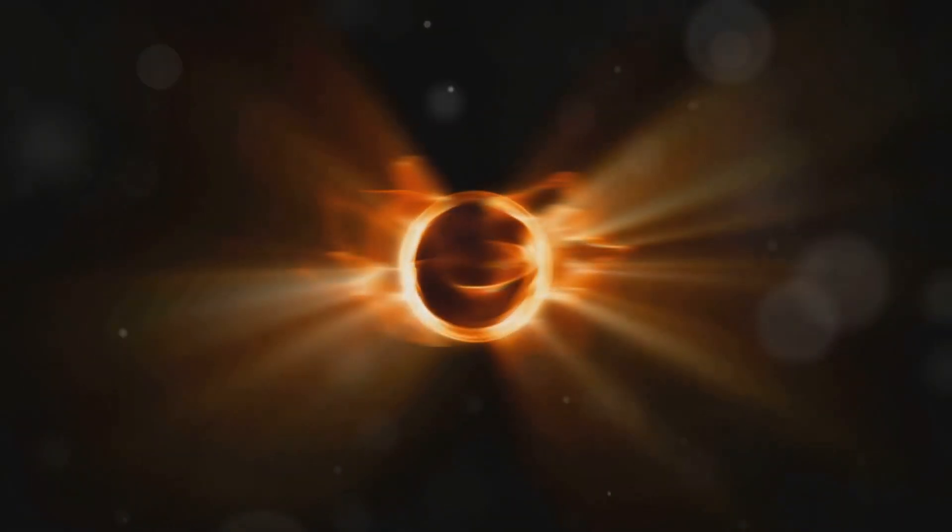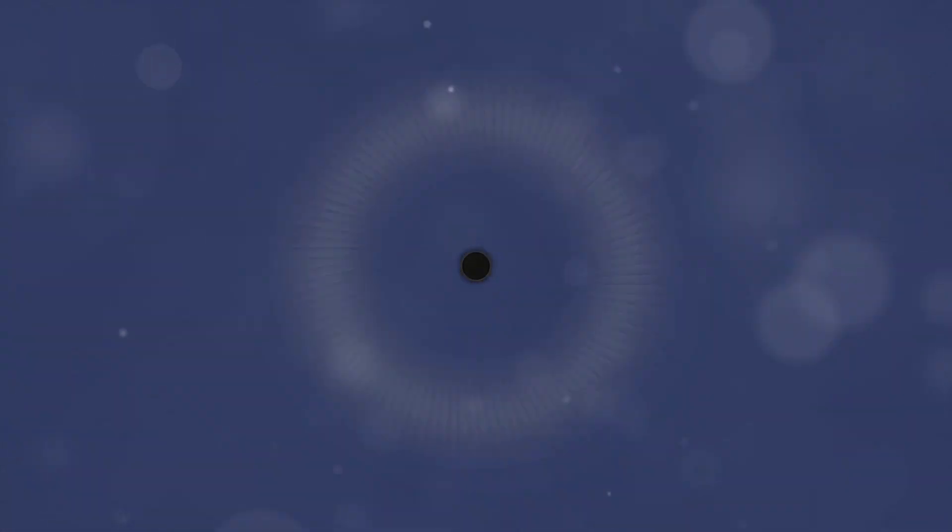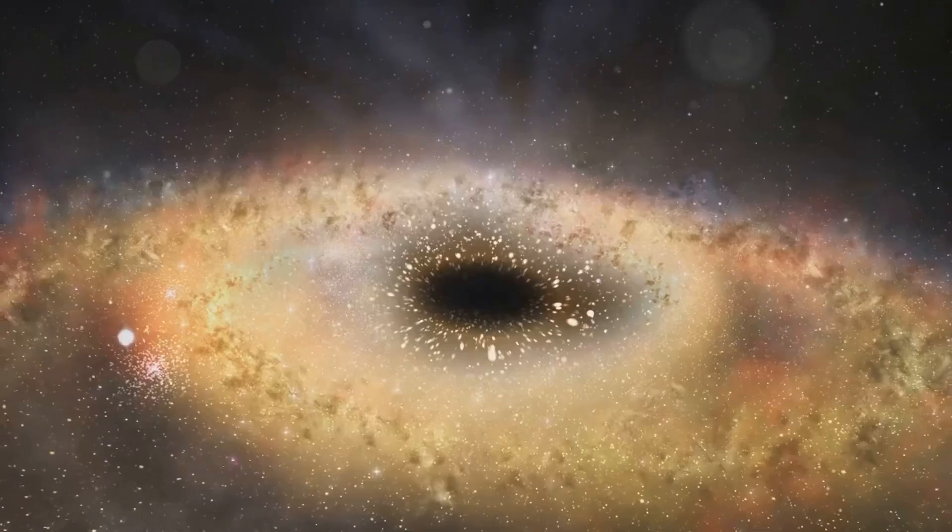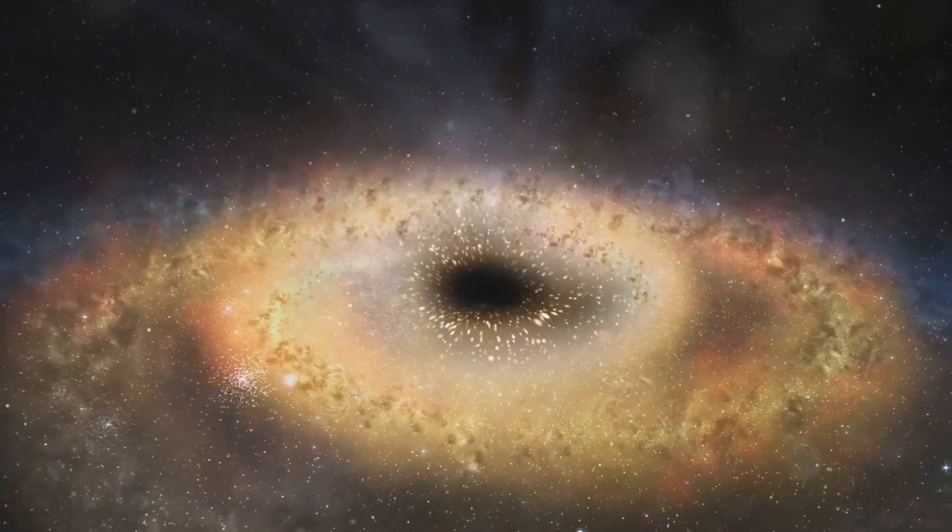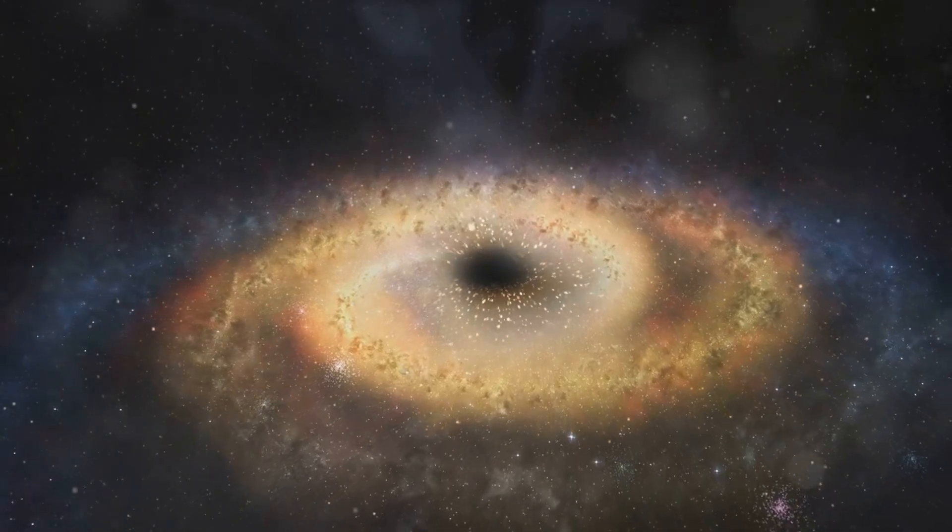Surrounding the singularity is the event horizon, the point of no return. Once something crosses the event horizon, it is destined to be pulled into the singularity where it is crushed out of existence. Black holes come in different sizes, from stellar mass black holes a few times heavier than our sun to supermassive black holes millions or even billions of times more massive, often found at the centers of galaxies.